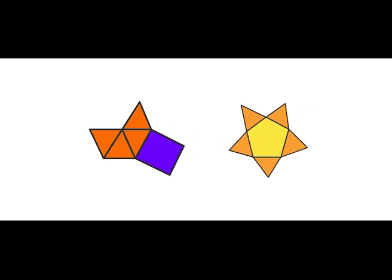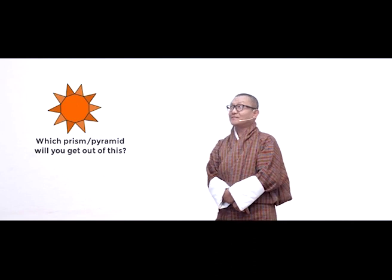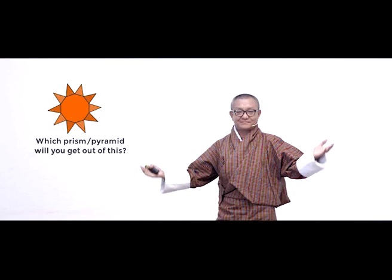Let's take another example. In the center you can see a pentagon, so by looking at the pentagon I know you will say this is a pentagon base pyramid. Let's take a more challenging shape — it looks like a star, but no, it's just a net. So which prism or pyramid will you get out of this? I'll leave this one for you to find out.